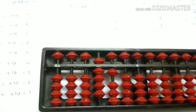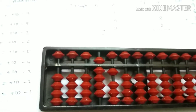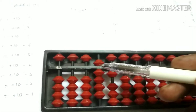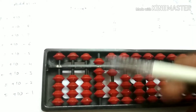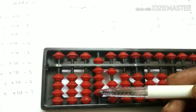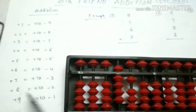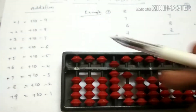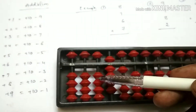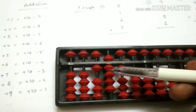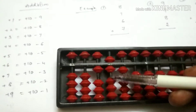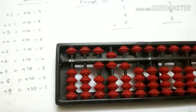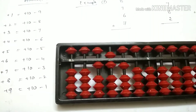Then next, the question has 7. 7 means now we have no sufficient beads. So plus 7 is equal to 10 minus 3. Take 10 and do minus 3. Do subtract minus 3.